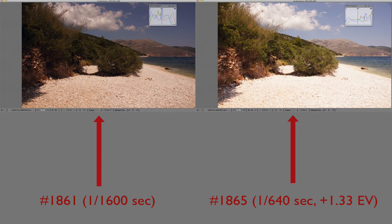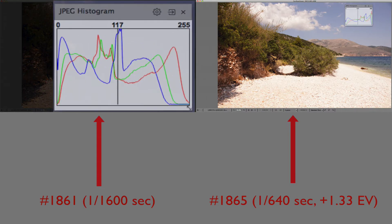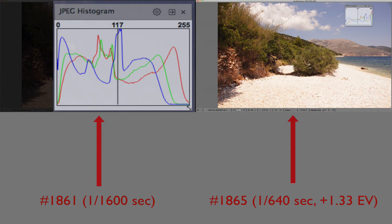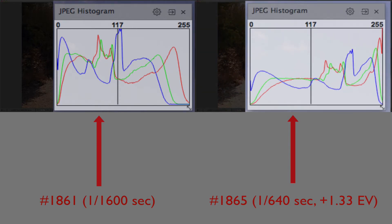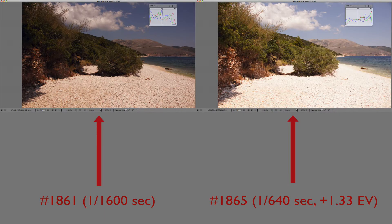Looking at the JPEG histograms, out of the two shots, shot number 1861 is exactly what we need in terms of exposure — the histogram is just touching the right wall. While the second shot, number 1865, is heavily overexposed on the pebbles and on the clouds, lacking plenty of detail in those areas. The histogram for the embedded JPEG of shot number 1865 is climbing the right wall, confirming what seems to be overexposure.